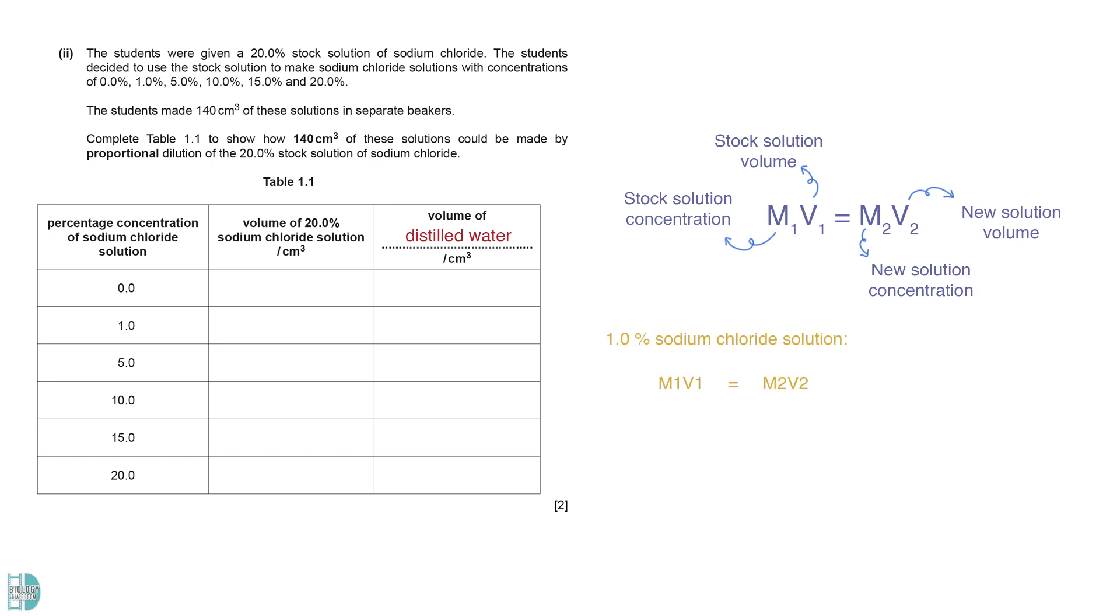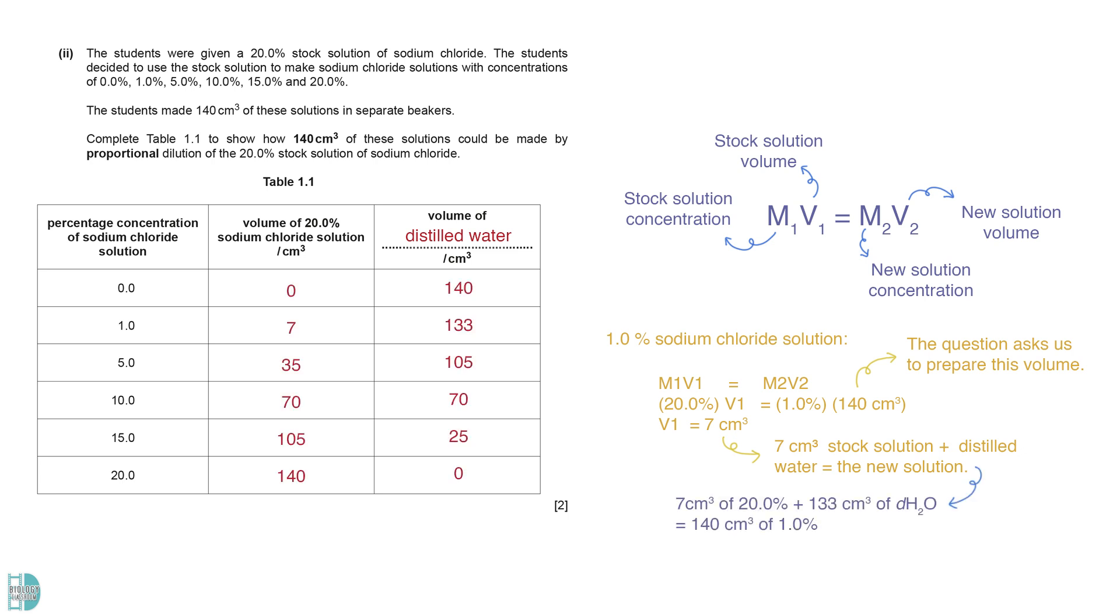Let's use the preparation of the 1% solution as an example. M1 is the concentration of the stock solution, 20% in this case. V1 is what we want to determine. M2 is 1%, the concentration of the new solution we want to make. V2 is the volume of the new solution we want to prepare. It is 140 cm³. V1 equals 7. This means that we need to add 7 cm³ of the stock solution to distilled water to obtain the new solution. Therefore, 133 cm³ of distilled water is required.